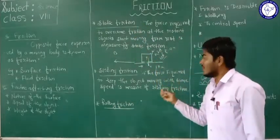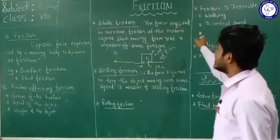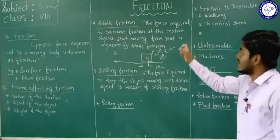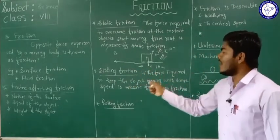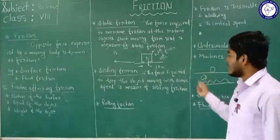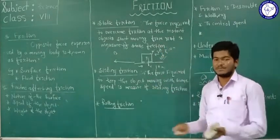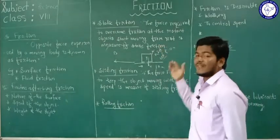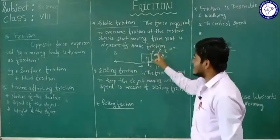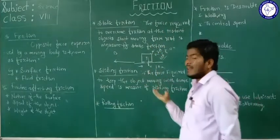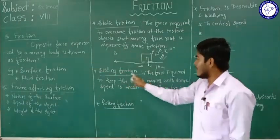The energy required to move a sliding object is called sliding friction. Static friction is the force required to move a static object from rest. Sliding friction is the force required to keep a moving object moving continuously — it is less than static friction. The force required to keep an object moving at the same speed is the measure of sliding friction.